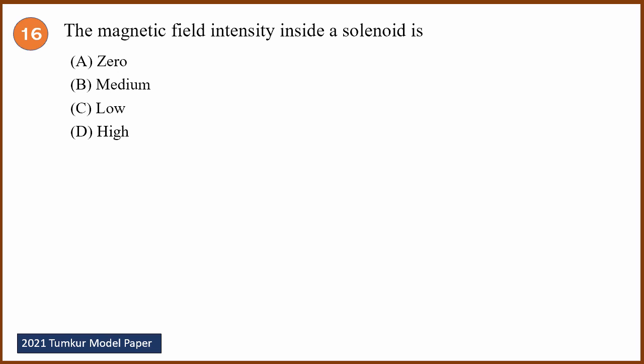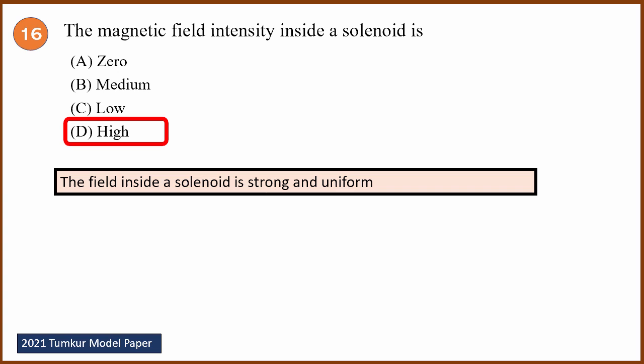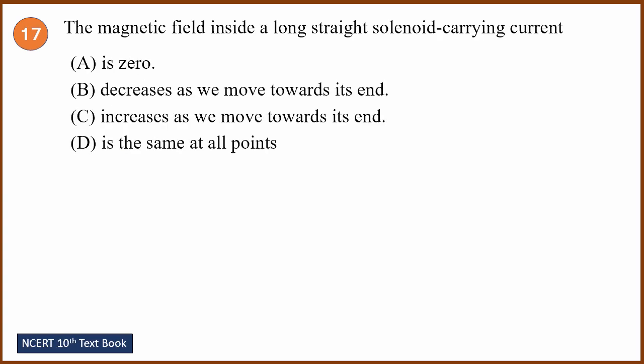Sixteenth question — Tumkur model paper: the magnetic field intensity inside a solenoid is high. The field inside a solenoid is strong and uniform — not weak, zero, medium, or low. The answer is D. Seventeenth question (also from textbook): the magnetic field inside a long straight solenoid carrying current is the same at all points — it is uniform, not zero, and does not increase or decrease towards the ends. The answer is: it is same at all points.